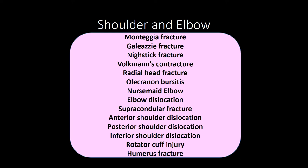Elbow dislocations — posterior dislocations are most common. Assess the brachial artery and ulnar nerve. Treatment is closed reduction; reassess neurovascular function after reduction. Supracondylar fractures are often seen in children — also assess the brachial artery and median nerve.